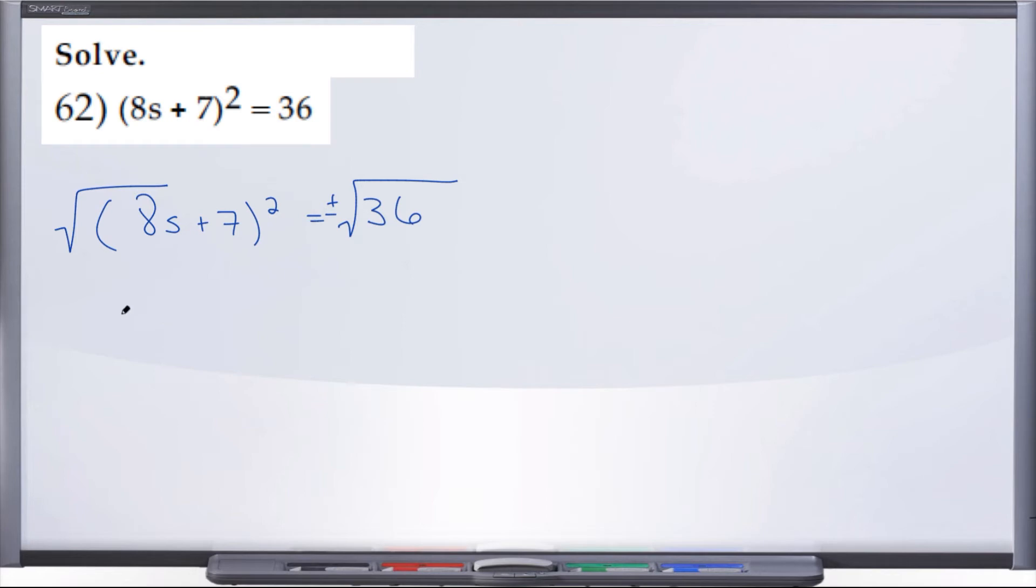So here on the left, we'll have 8s plus 7 equals plus and minus—well, what is radical 36? Radical 36 is 6.